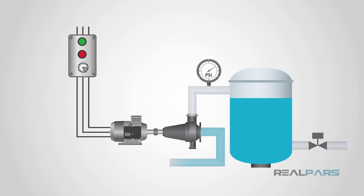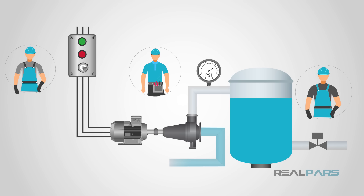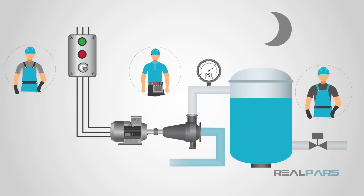Before SCADA, plant personnel had to monitor and control industrial processes via selector switches, push buttons, and dials for analog signals. This meant that plants had to maintain personnel on-site during production in order to control the processes.